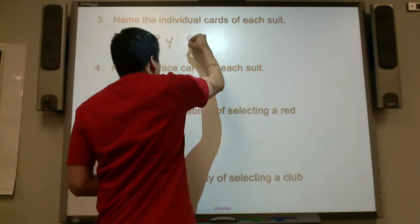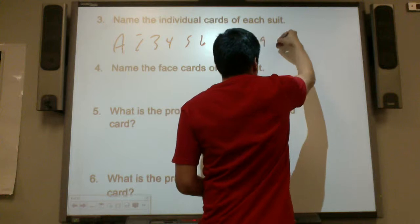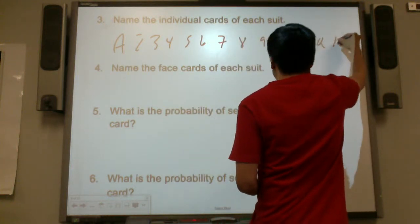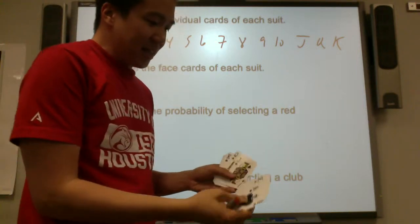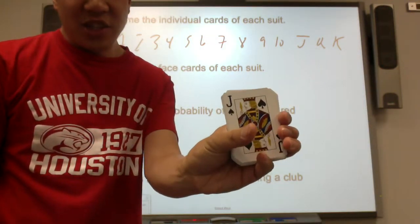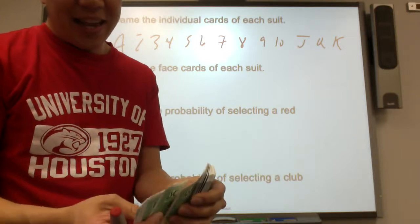So ace, two, three, four, five, six, seven, eight, nine, ten, jack, queen, and king. Name the face cards. A face card means it has a person's face on it. It's jack, queen, and king.